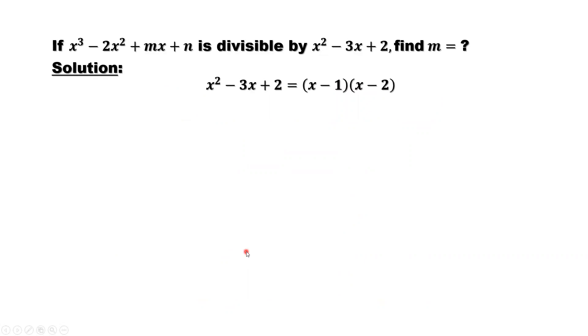First of all, we factor x squared minus 3x plus 2 into x minus 1 times x minus 2. This means x equals 1, x equals 2, or two zeros for this polynomial x squared minus 3x plus 2. Because x to the power 3 minus 2x squared plus mx plus n is divisible by x squared minus 3x plus 2, we imply x equals 1, x equals 2 are also zeros for x to the power 3 minus 2x squared plus mx plus n.